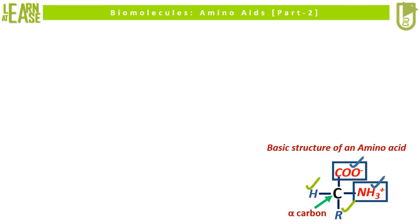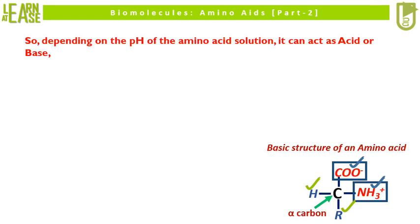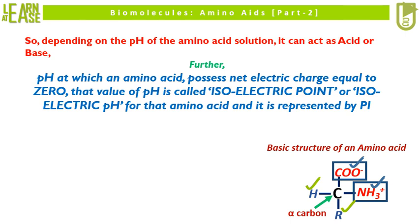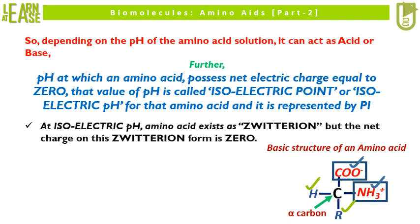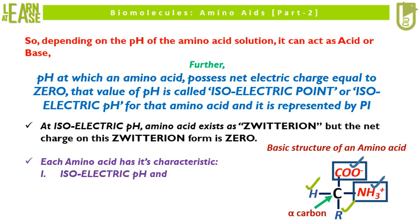The basic structure of an amino acid is shown at the bottom right. Depending on the pH of the amino acid solution, it can act as an acid or base. The pH at which an amino acid possesses a net electric charge equal to zero is called the isoelectric point or isoelectric pH for that amino acid, and it is represented by pI. At isoelectric pH, the amino acid exists as a zwitterion, but the net charge on this zwitterion form is zero. Each amino acid has its characteristic isoelectric pH and pKa values.